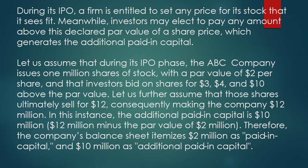An example will make it very clear. Let's assume that during its IPO phase, the APC company issued 1 million shares of stock with a par value of $2 per share, and that investors bid on shares for $3, $4, and $10 above the par value. Let us further assume that those shares ultimately sell for $12, consequently making the company $12 million.